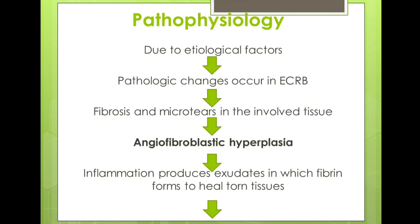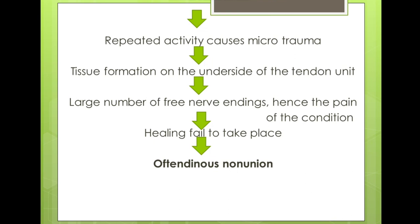Now we discuss the pathophysiology. Due to etiological factors, pathological changes occur in the ECRB, leading to fibrosis and micro-tears in the involved tissues, forming angiofibrolastic hyperplasia. Inflammation produces exudates in which fibrin forms to heal torn tissues. If the patient performs repeated activity, it causes micro-trauma, leading to tissue formation on the underside of the tendon unit, which affects the nerve endings, causing the patient to feel pain. This ultimately leads to healing failure and finally tendinous non-union.